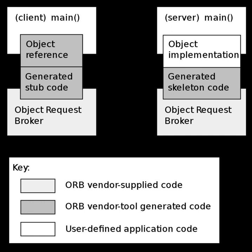You always incarnate a servant before calling activate_object, but the reverse is also possible. create_reference activates an object without incarnating a servant, and servant incarnation is later done on demand with a servant manager. The portable object adapter is the CORBA object responsible for splitting the server-side remote invocation handler into the remote object and its servant. The object is exposed for remote invocations, while the servant contains the methods that are actually handling the requests.